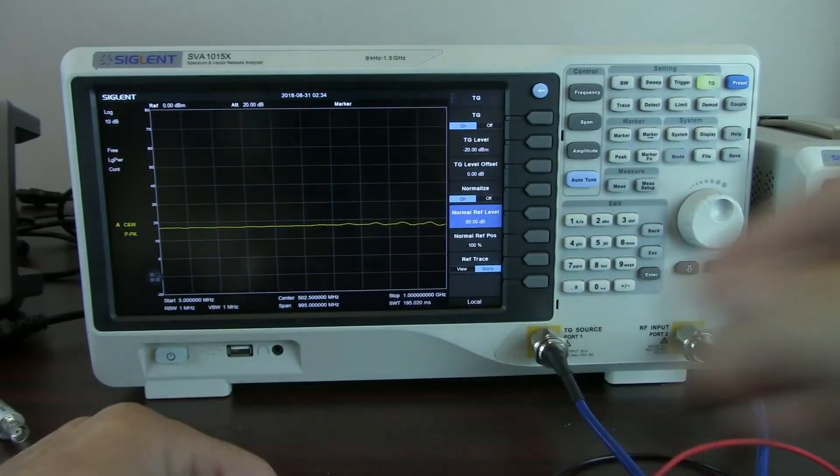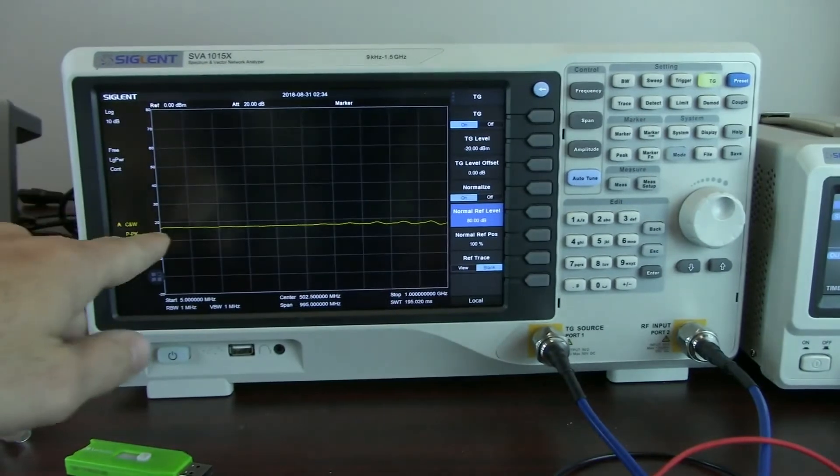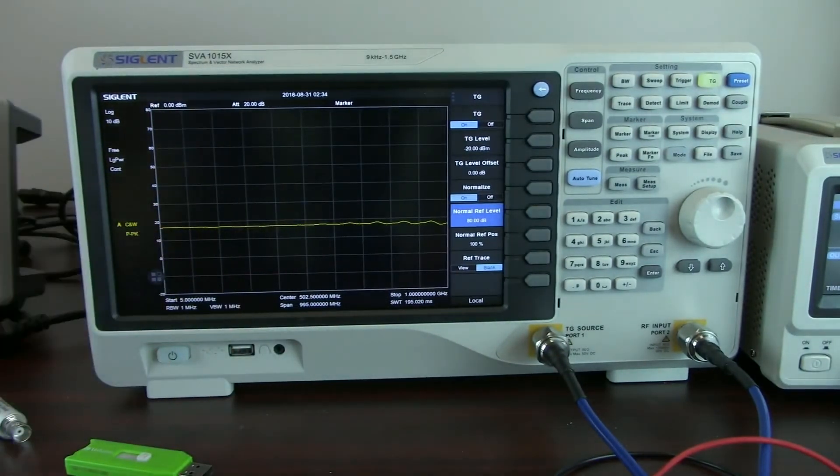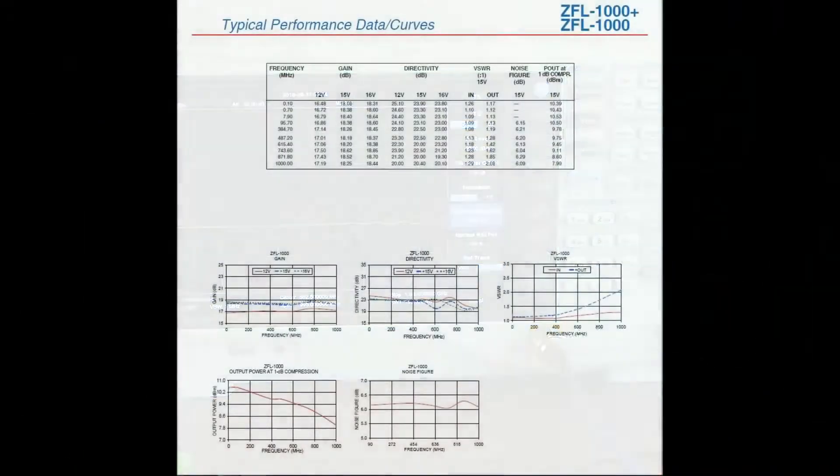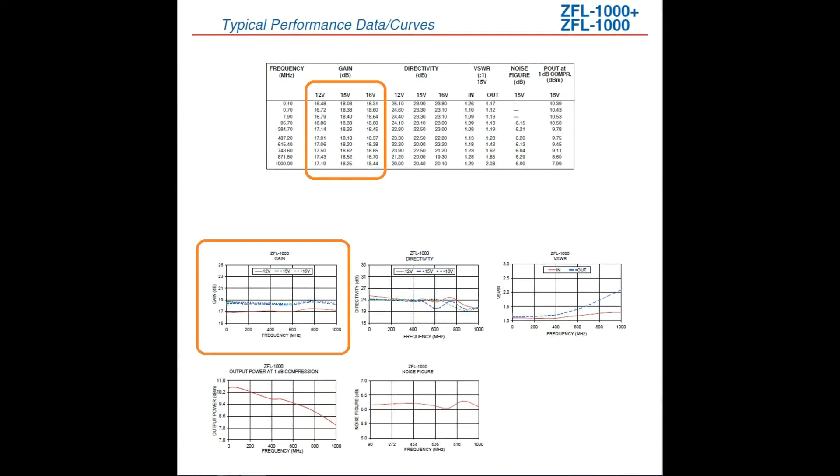And you can see on the display, getting a nice flat curve at about plus 17 dBm. If we take a look at the datasheet, we can see that at 12 volts of supply voltage, we have an expected gain of around 17. So that's really nice, 17 dB gain off of that output.